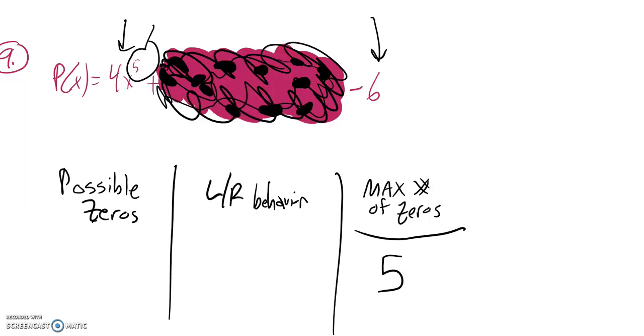The left-right behavior. I know that this is positive, so to the right it's going to be going up. And then since this degree is odd, it's going to go in opposite direction at the extreme. So the left will go down, the right will go up.